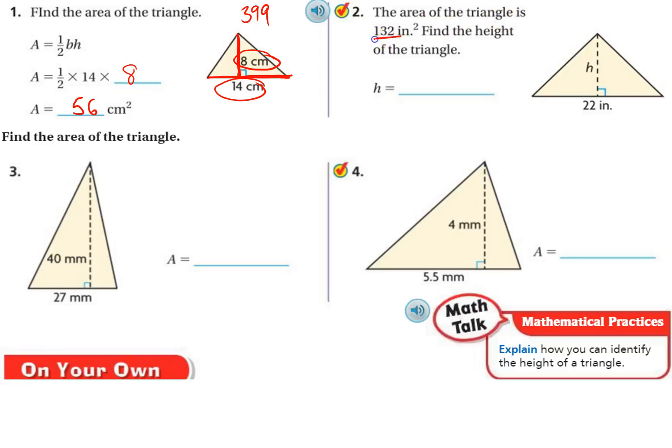Okay, number 2. The area is 132. So, this time they gave us the area 132. And we know that equals one-half times the base, which is 22, times the height, which is what we don't know. Well, one-half of 22. Half of 22 would be 11. So, I'm going to come down here.